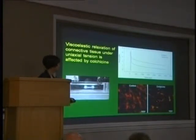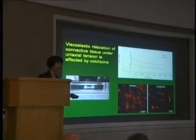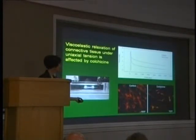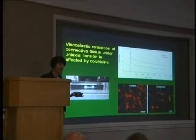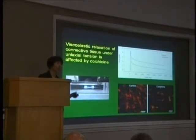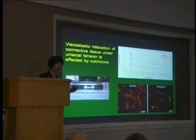Then we compared that to tissue treated with colchicine. Colchicine is a drug that depolymerizes the microtubules of the cell, and the microtubules are very important parts of the cytoskeleton that allow the cell to maintain its shape. So colchicine prevents that from happening. The red curve represents the viscoelastic relaxation of connective tissue with colchicine — it relaxes at a higher level of tension, meaning it does not relax as much. So the active component of the cells is causing the tissue to relax further. This is active tissue relaxation.